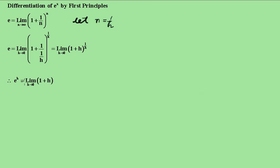Now I'm going to raise both sides to the power h. This becomes e to the h because when you raise that, it becomes 1 over h times h which is just simply 1. So we're going to use that in the next section.